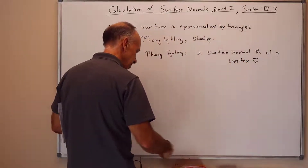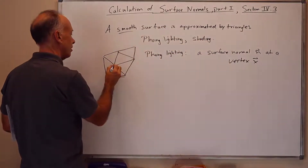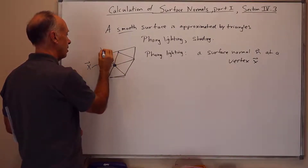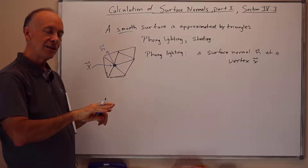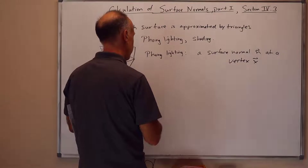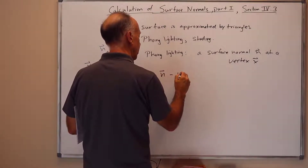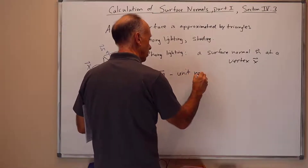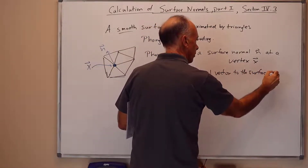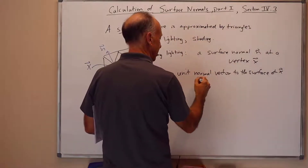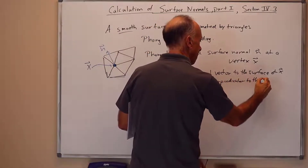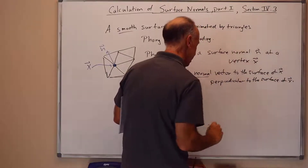The picture is: here we've got a vertex x, and we want to have a normal vector. A normal vector is going to be at right angles to the surface. Underlying this triangular surface, there's some idealized smooth surface, and n is at right angles to that surface. For Phong lighting, it needs to be a unit normal of length 1 — a unit normal vector to the surface at x, meaning it is perpendicular to the surface at x.